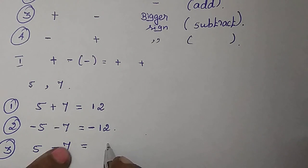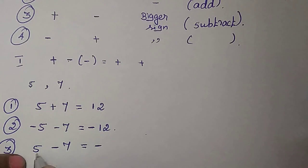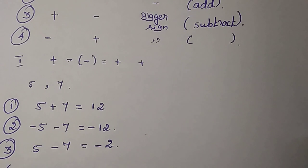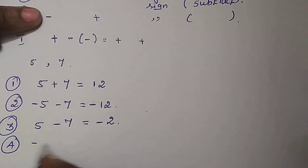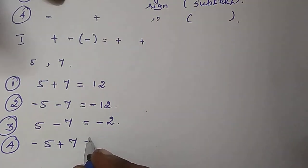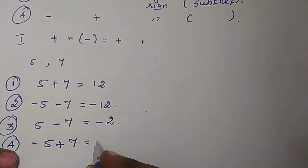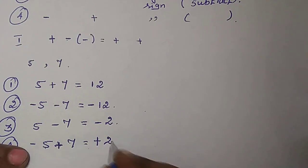Comparing these two, 7 is the bigger number. So 7 is minus, then we subtract: 7 minus 5 gives 2. For the fourth rule, minus 5 plus 7 — this is the same rule. Bigger number is 7 with a plus sign, so 7 minus 5 is 2.